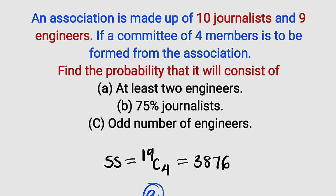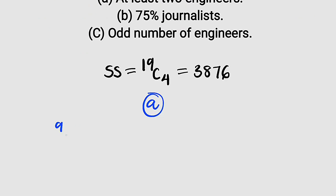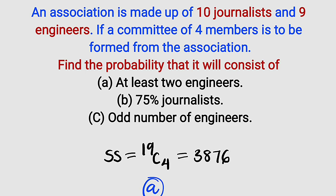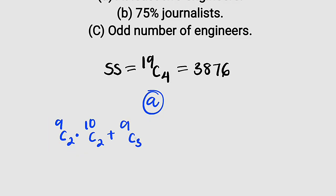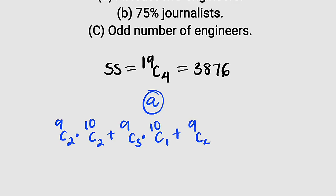If we have two engineers — remember, the total number of engineers is nine — we are selecting two, so that gives us 9C2. Since the committee has four members and we've selected two engineers, we select two from the journalists, giving us multiplied by 10C2. Or we could have three engineers: 9C3, and then select one journalist: multiplied by 10C1. Or 9C4 engineers, multiplied by 10C0 journalists. Note that the selections always sum to four.